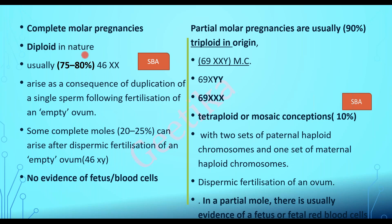In complete mole, the genetic makeup is diploid in nature. In 75 to 80 percent of cases it is 46XX. Complete mole occurs because a single sperm with normal genetic material — that is 23X — fuses with an empty ovum and then duplicates its own chromosome. This is known as androgenesis, resulting in 46XX chromosome. The entire set of chromosomes comes from the father — it is paternal in origin. There is no maternal genetic makeup in complete mole.